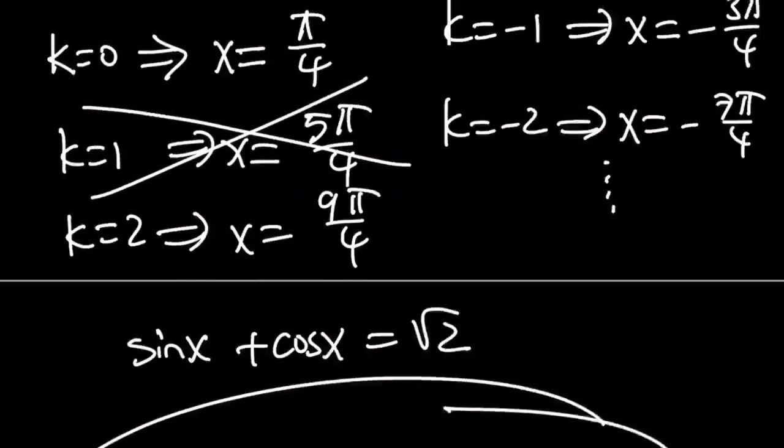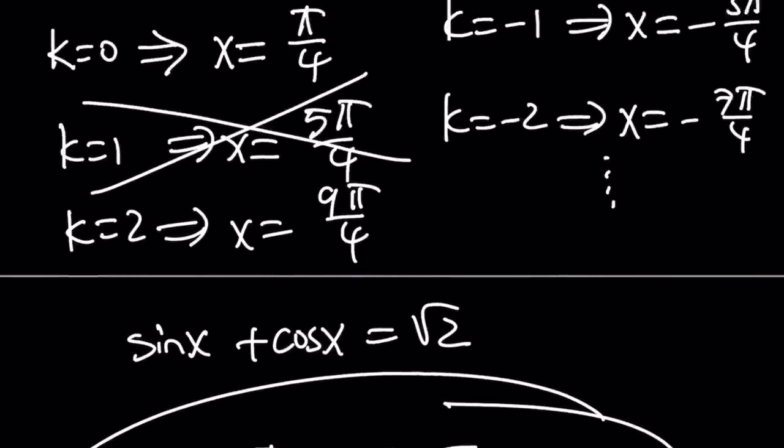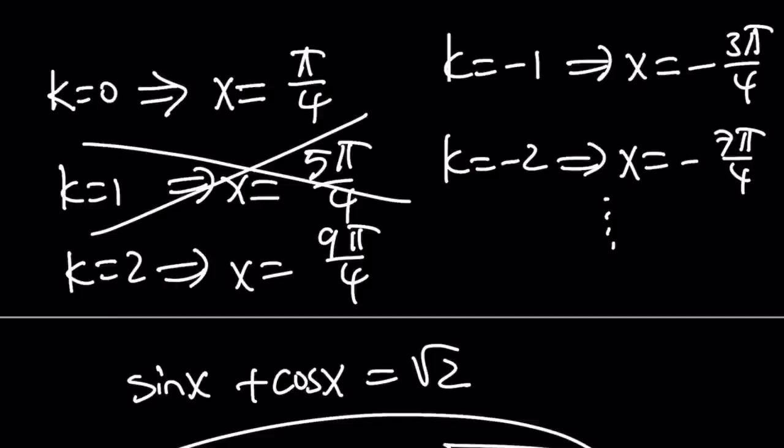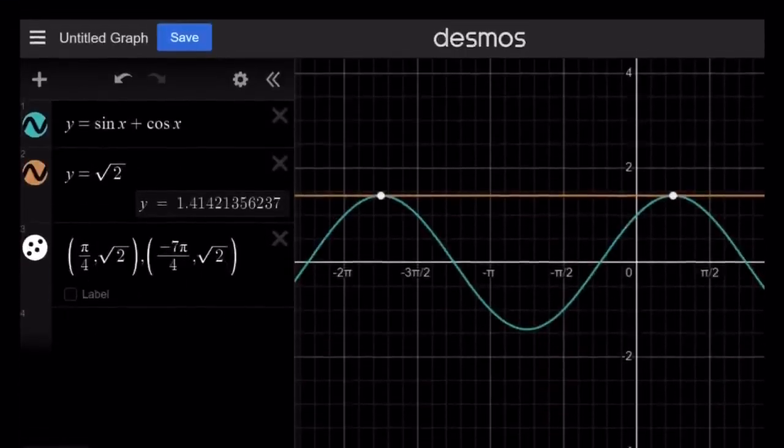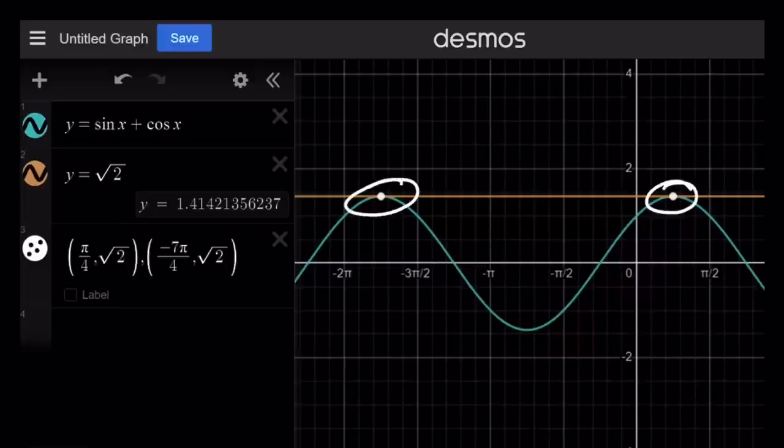So basically the idea here is we introduce extraneous solutions we have to clean up. For example negative 3 pi over 4 doesn't work in the original equation either because if you find the sine and cosine you're going to notice it doesn't satisfy. And here's the graph of sine x plus cosine x which is actually similar to sine and cosine graph because it's just a multiple of that. The intersection points are infinitely many but you can see pi over 4 here and negative 7 pi over 4 here as an example.